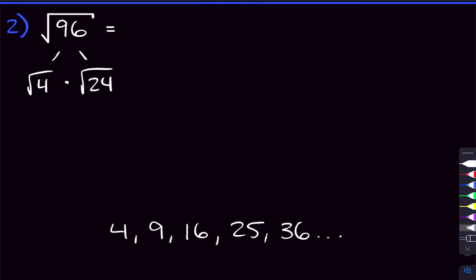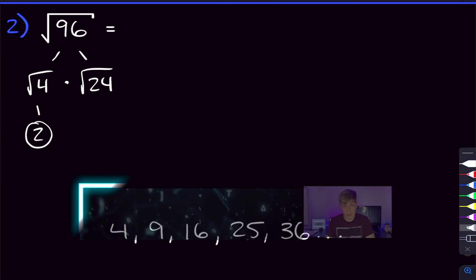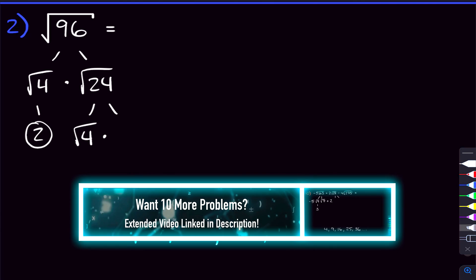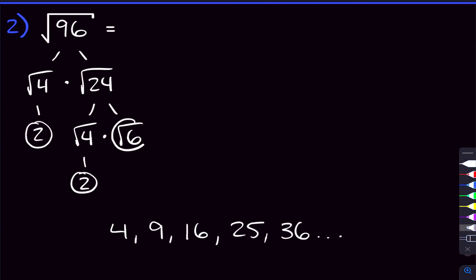So the square root of 4 — we know that is 2. But is the square root of 24 in simplest radical form? Can we take anything out from that? Yeah, we can take out 4. We can break this up into the square root of 4 times the square root of 6, since 4 times 6 is 24. The square root of 4 is 2. So now we have the square root of 96 equals 2 times 2, that's 4, times rad 6. And rad 6 we cannot simplify anymore, so that is our answer in simplest radical form.